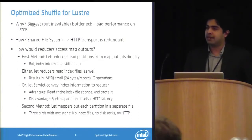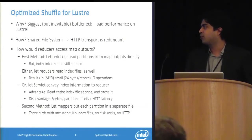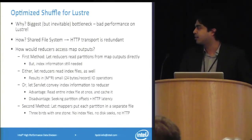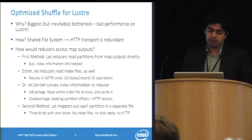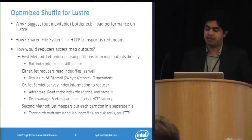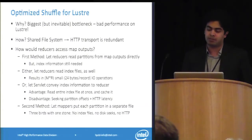The second approach was to have maps dump outputs onto Lustre and make the servlet convey just the indexing information, allowing index files to be cached in memory. But reducers would still need to seek to partition offsets in each map output file, and the HTTP latency wasn't fully eliminated. The method we finalized on was to make mappers output each partition into a separate file, so each reducer simply knows which file to pick up. This completely eliminated index files, disk seeks, and the need for HTTP streaming.